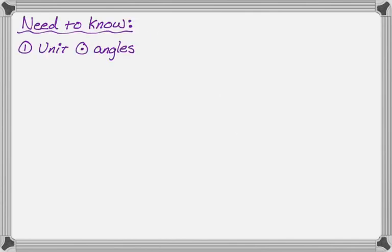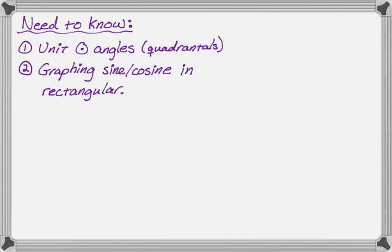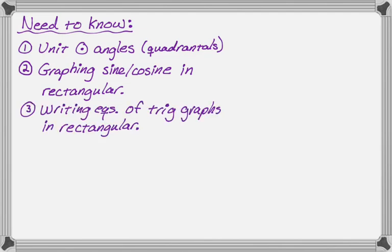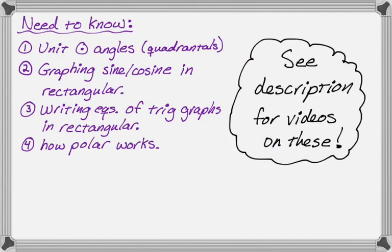First thing you're going to need to know is the unit circle angles, and specifically the quadrantals, which are on the coordinate axes. Second thing you need to know is how to graph sine and cosine in rectangular. We're going to write equations for polar graphs, but it's going to come down to the graphs of sine and cosine in rectangular coordinates. Then you're going to need to know how to write the equation of trig graphs in rectangular — sine and cosine. We also really need to know how polar graphs work: how they're traced out, and that you can have negative r values for certain theta values. If you have any questions about any of these, look in the description because there are links to videos I've made about those topics.